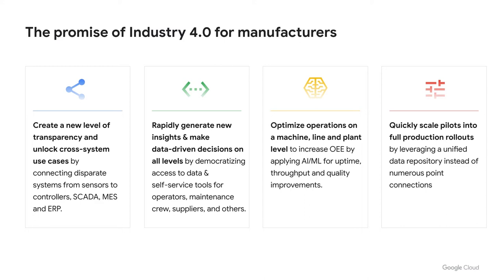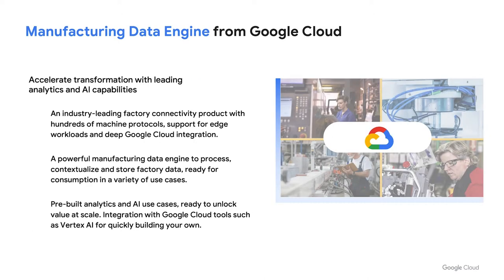But once we have all this data, then what do we do with it? The benefit of Industry 4.0 is you can optimize operations on a machine level or a plant level. You want to increase your key metrics like overall equipment efficiency, and you want to bring all your AI and ML technology together. More importantly, we want to quickly move from the pilot phase into full production rollouts. We're tackling those challenges through our Manufacturing Data Engine from Google Cloud.